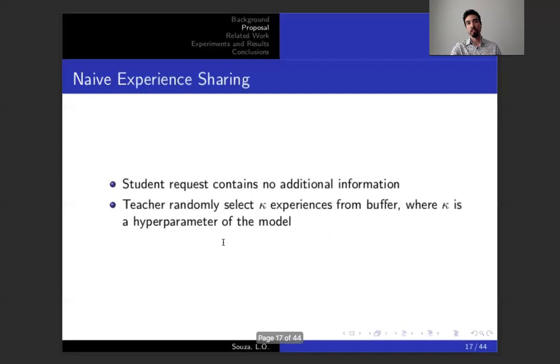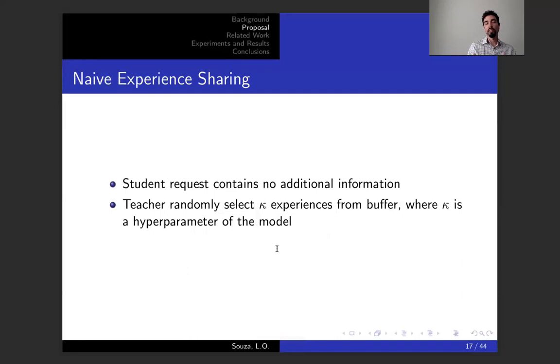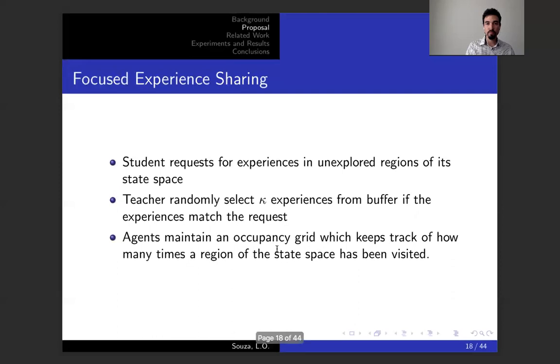A little more details on naive experience sharing. Here we're using the teacher-student nomenclature, but keep in mind that all agents could be both student and teacher at the same time. They're requesting experience and they're also receiving experience at all times. A student issues a request, the request has no information in naive experience sharing. Then teachers select CAP experiences from a buffer. CAP is a hyper parameter of the model and represents the communication bandwidth and the cost of communication. There is a limited number of experiences you can share. In the naive, you just randomly select experience and share.